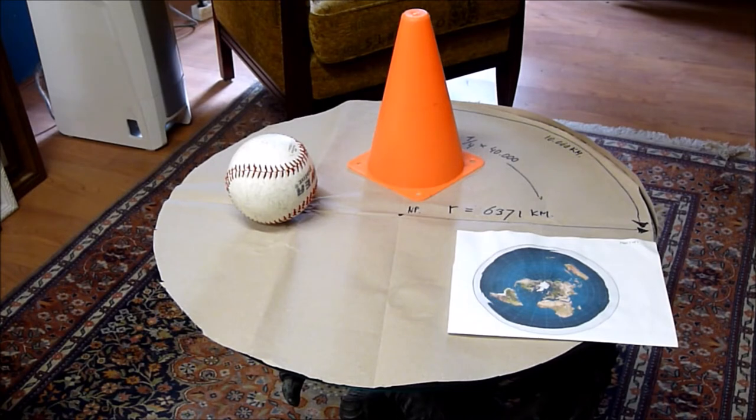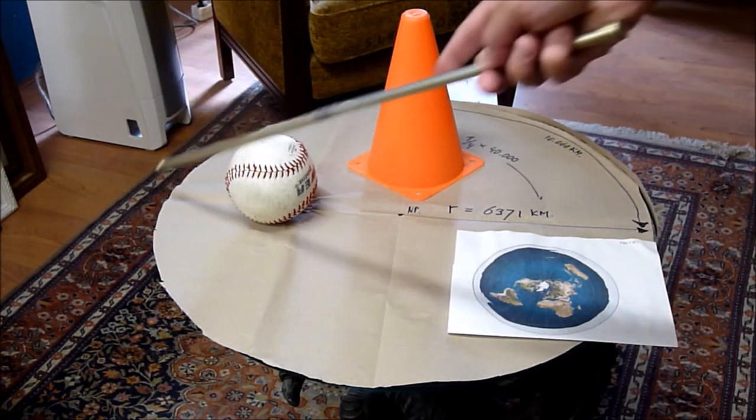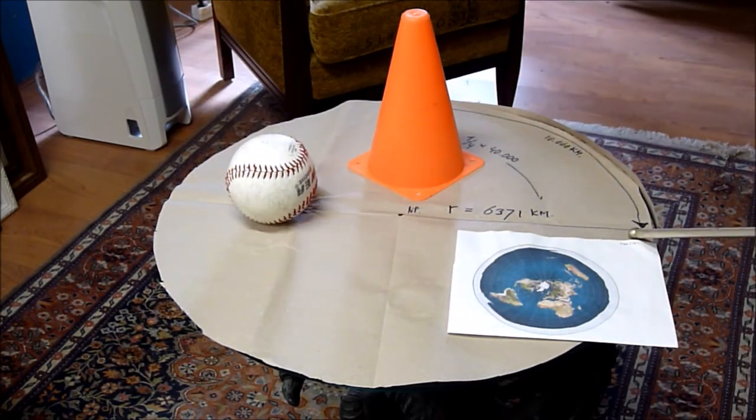We gaan kijken hoe je met de kennis die je ooit had toen je 11 jaar was, eigenlijk gewoon moet kunnen bewijzen dat de aarde niet plat kan zijn. Weet je überhaupt hoe je de omtrek van een cirkel berekent? Want dat leerde je toen je nog klein was en toen je 11 jaar was. Toen leerden wij dat de omtrek van een cirkel, dat was de diameter maal pi.